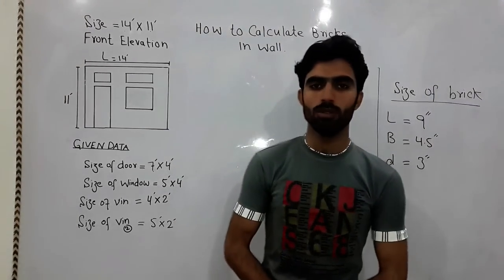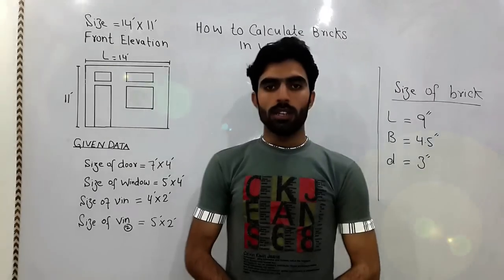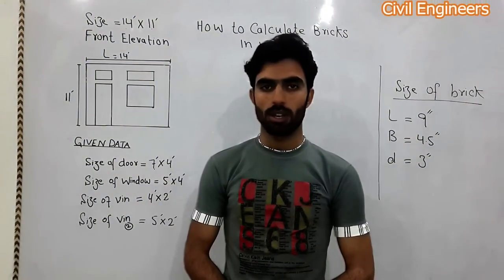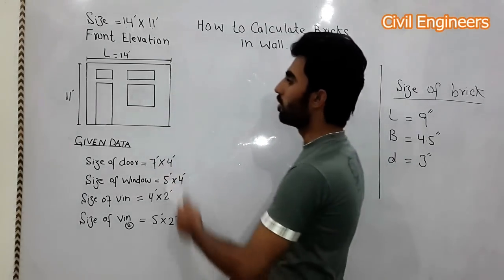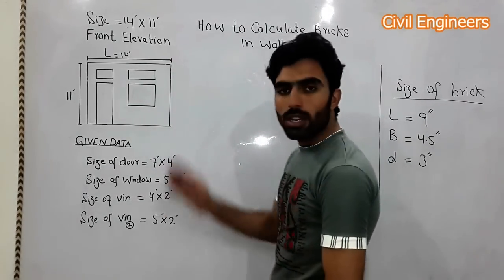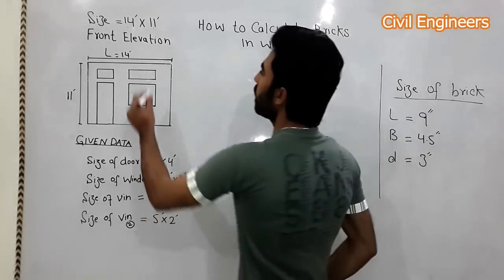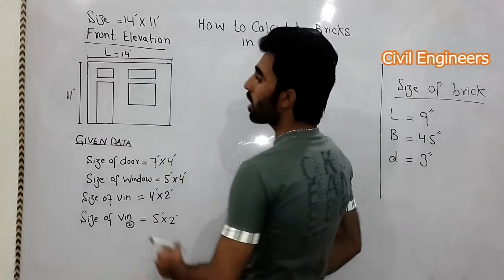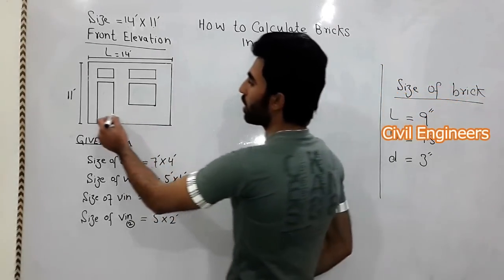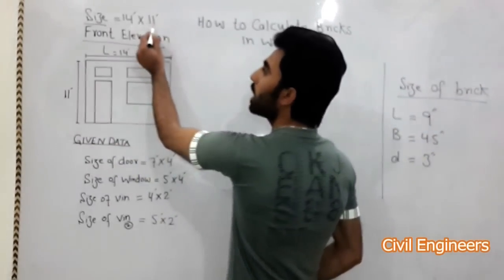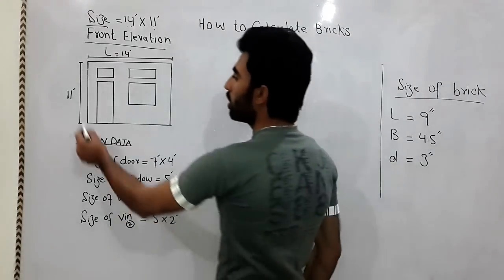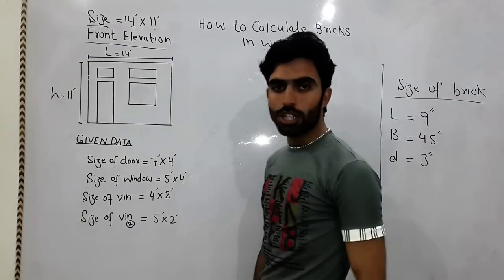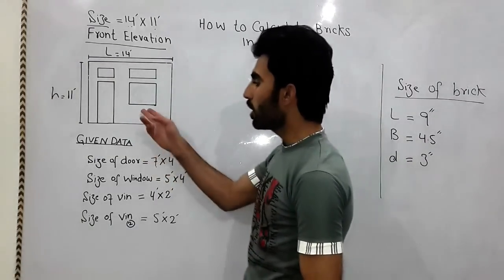Hello friends, welcome to this new lecture. Today I will teach you how to calculate the quantity of bricks. This is the section in front of you — the front elevation. The size of this section is 14 feet in length and 11 feet in height.